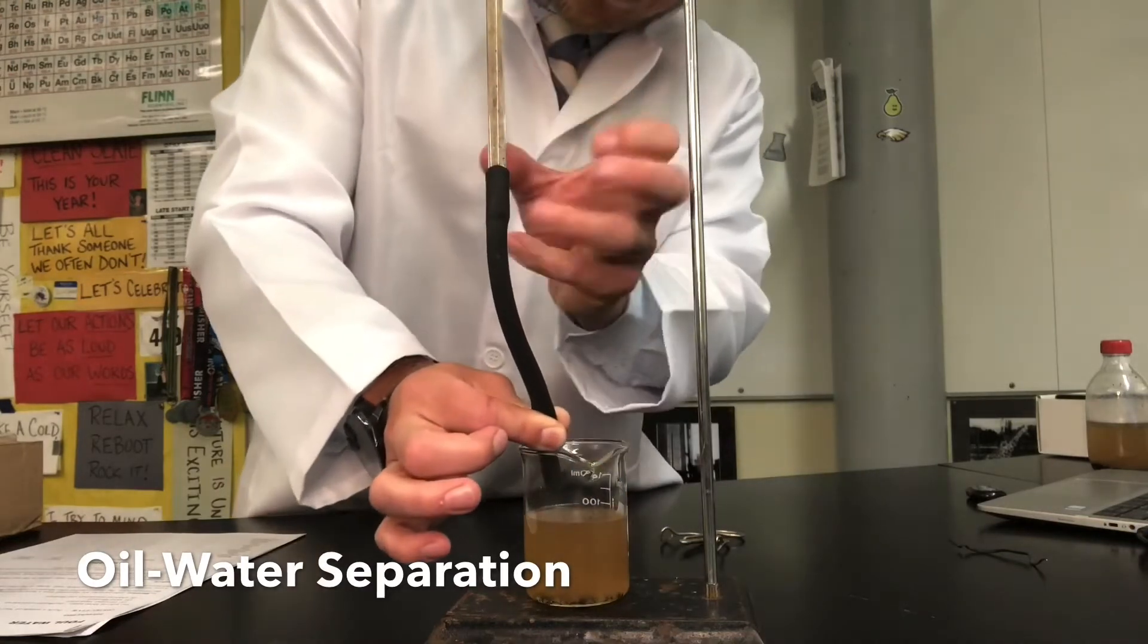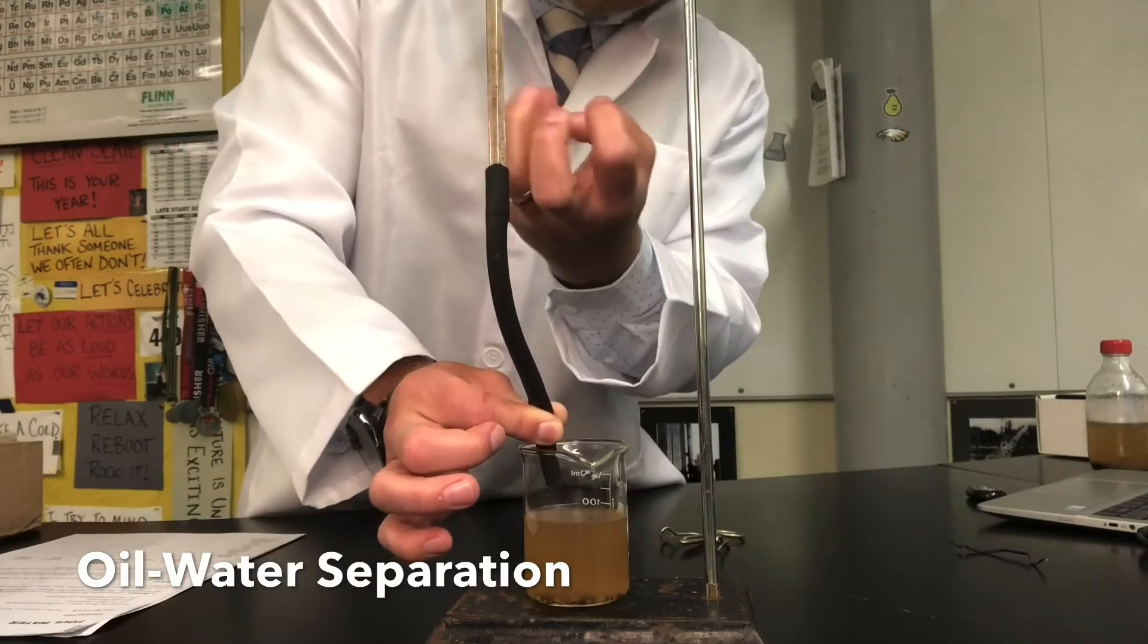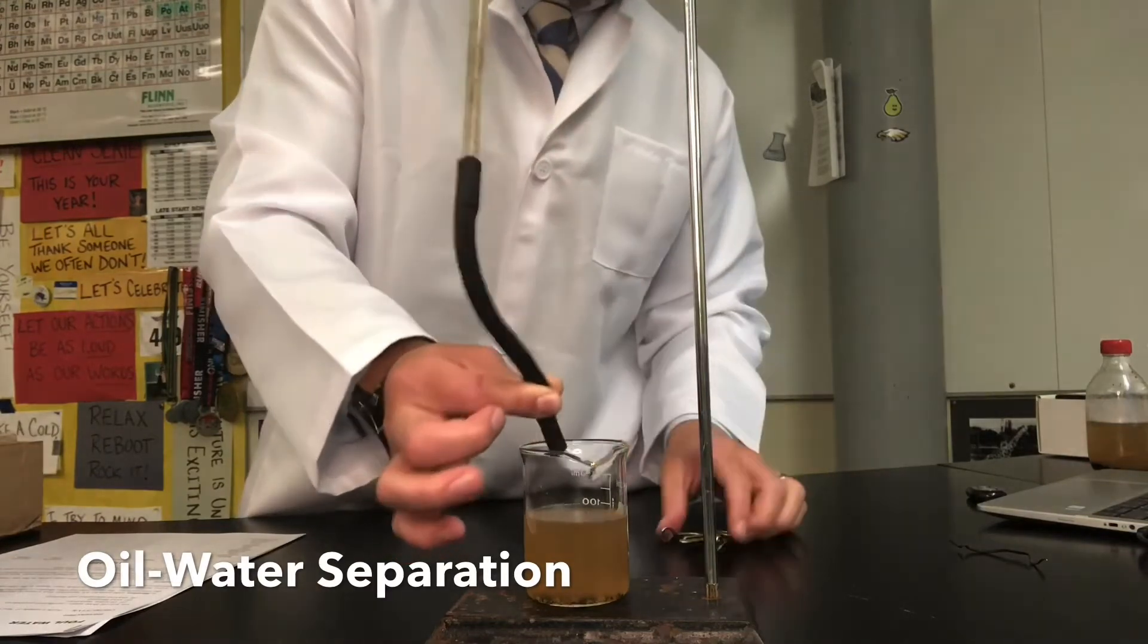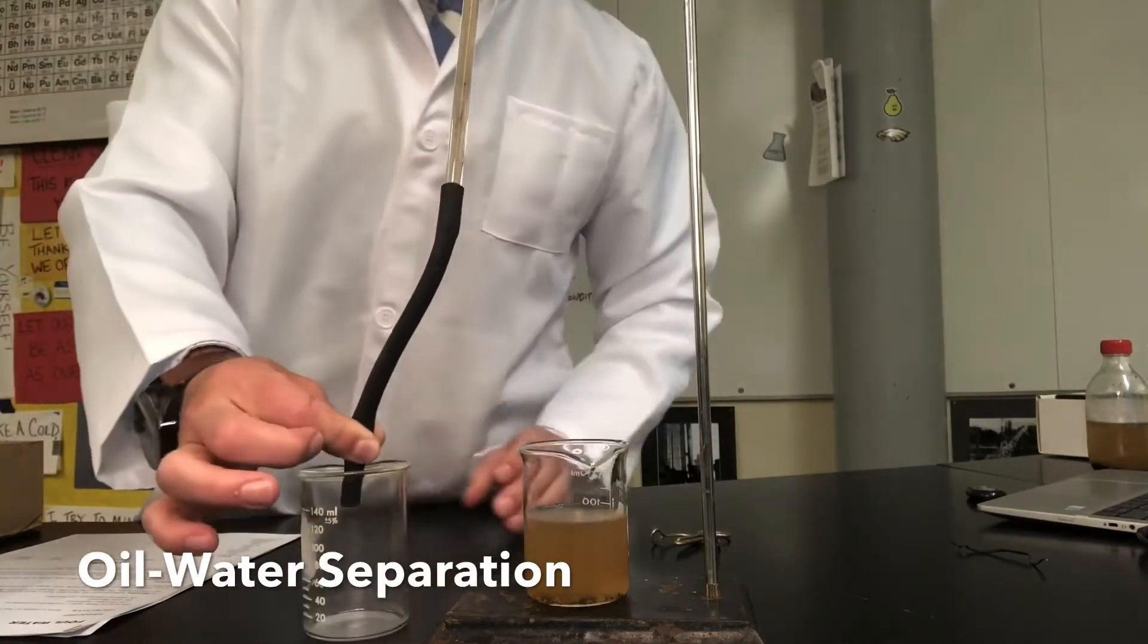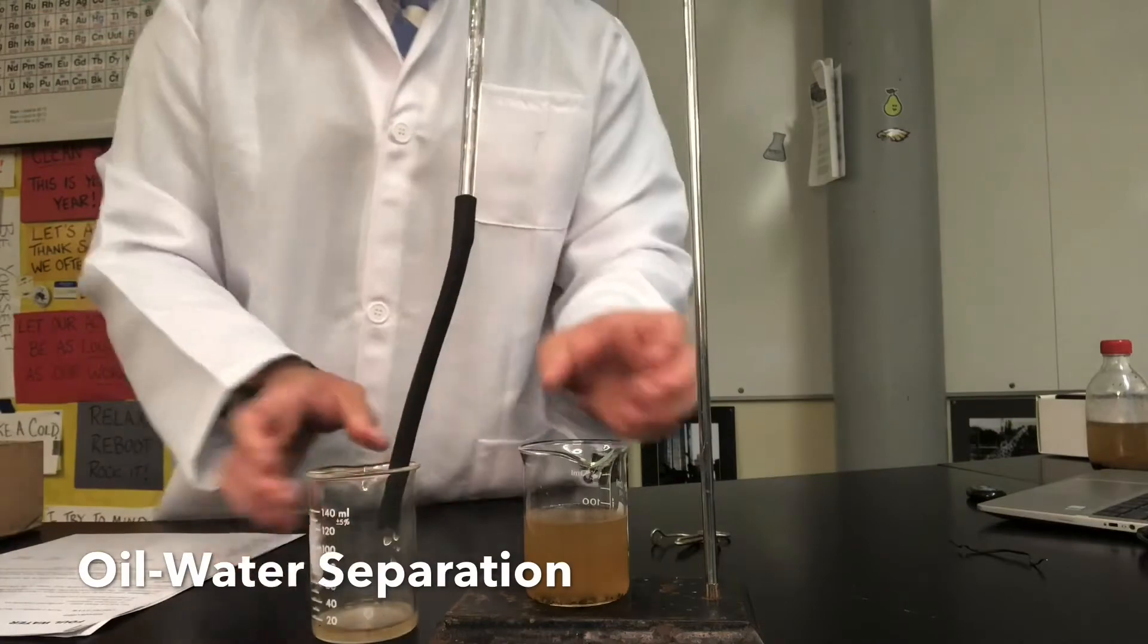All right and now you can see the little globules or little like spheres or circles of oil. I don't want that so I'm going to take another beaker and I'm going to empty that oil out into another container.